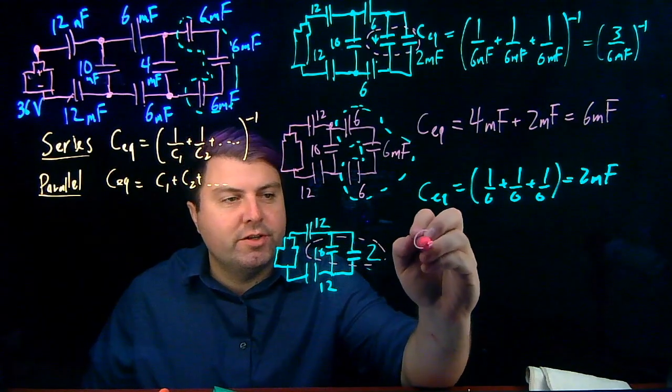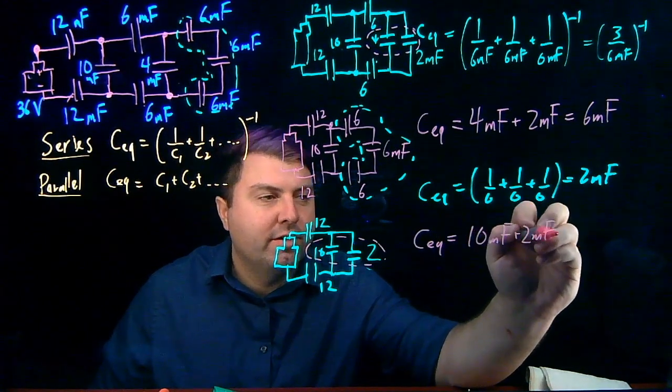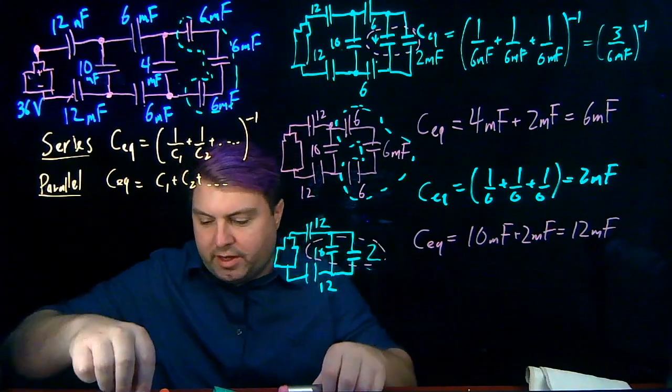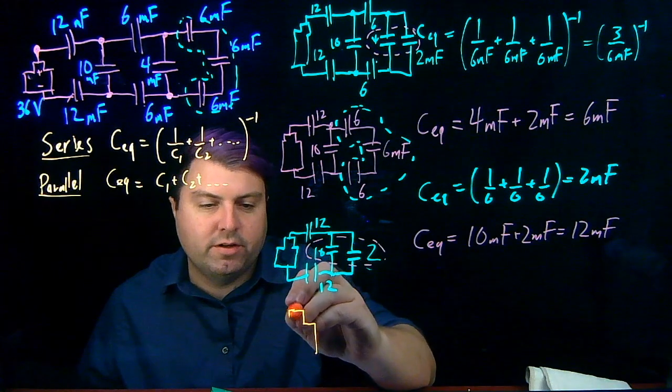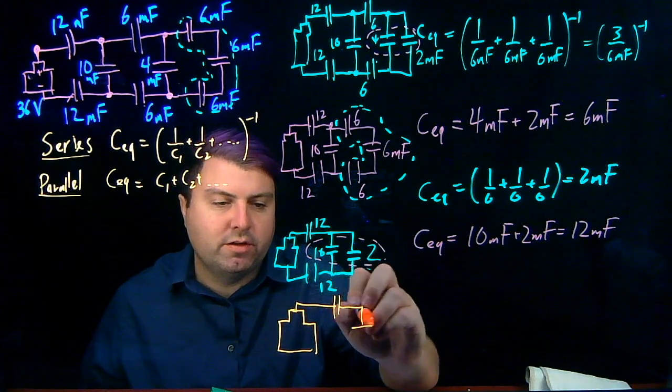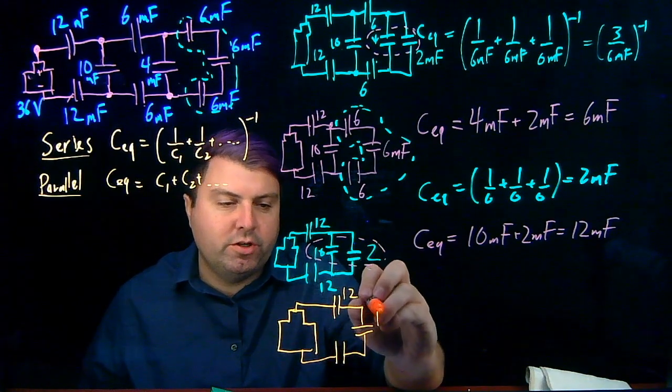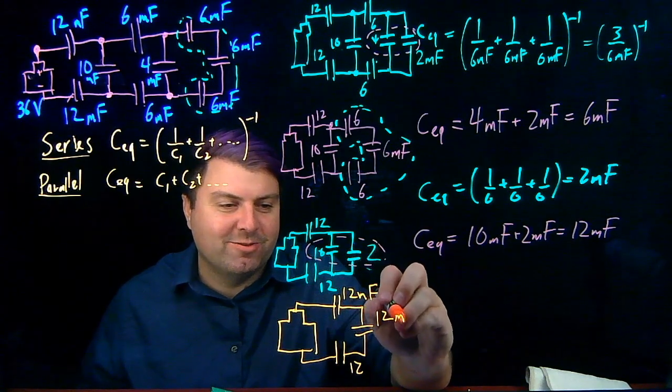So we have our C equivalent is 10 millifarads plus 2 millifarads. Easy enough, 12 millifarads. And so we can start drawing this a little bit nicer. We'll get a little bit more pens. Of course, we chose numbers such that everything works out a little bit nicer for ourselves.